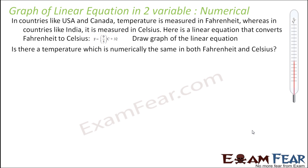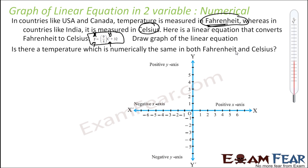Let's take one more example. In European countries, the US, and Canada, temperature is measured in Fahrenheit, but in countries like India it is degree Celsius. There is a relationship that converts temperature from Fahrenheit to Celsius: F is equal to 9 by 5 times C plus 32. This is a linear equation in two variables — a good application in the field of science. We have to draw the graph for this equation and also find the temperature at which both Celsius and Fahrenheit values are the same.